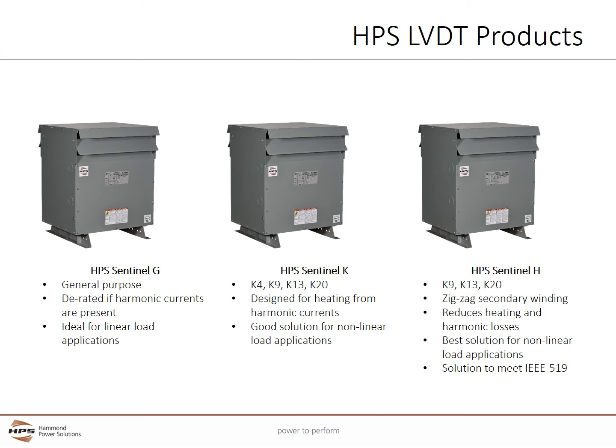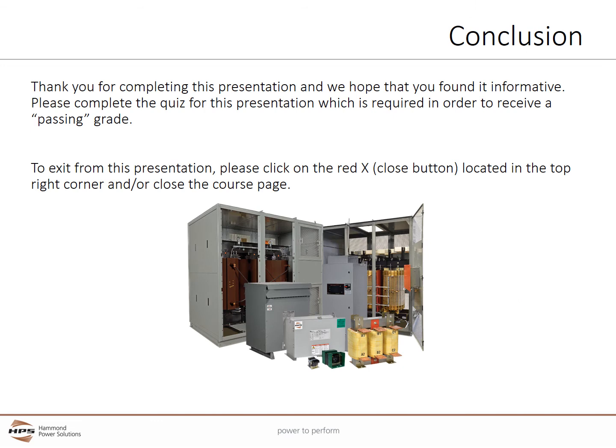The HPS Sentinel-H is a harmonic mitigating design that is also K-rated. The zigzag secondary windings cancel some harmonics and improve power quality. The Sentinel-H reduces overall heating and harmonic losses compared to the K-rated and general purpose transformers. It is the best solution for non-linear load applications and can be an integral solution to meeting IEEE 519. Thank you for completing this presentation. We hope you have found it informative.